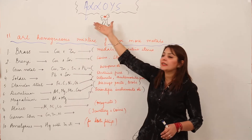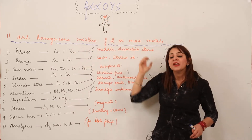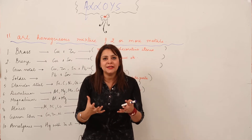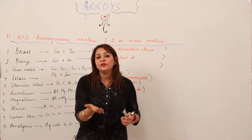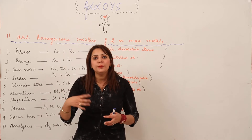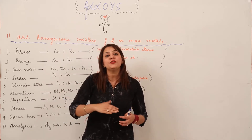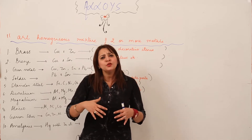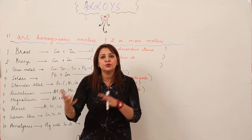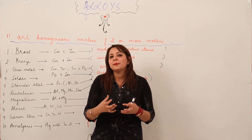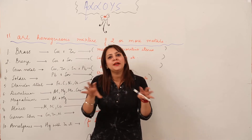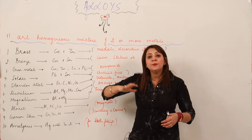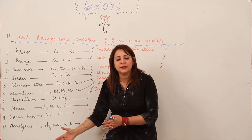An example of a homogeneous mixture is alloys — a homogeneous mixture of two or more metals. How are alloys made? We take two or more metals and heat them. Because they have low melting points, they melt and all the metals mix together. On cooling, they unite to form a single substance called an alloy with improved properties.